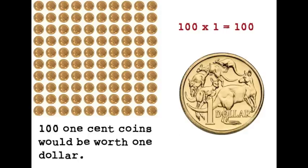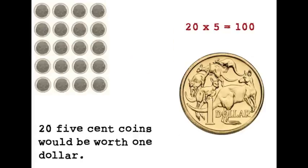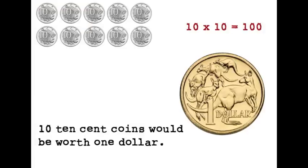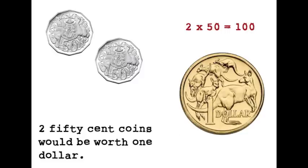One hundred 1-cent coins would be worth one dollar, because one hundred times one equals one hundred. Fifty 2-cent coins would be one dollar, because fifty times two equals one hundred. Twenty 5-cent coins would make a dollar, because twenty times five is a hundred. Ten times ten is one hundred, so ten 10-cent coins would make one dollar. Five times twenty cents equals one hundred cents. Two 50-cent coins is one dollar.